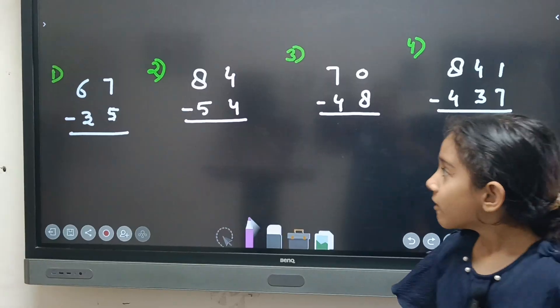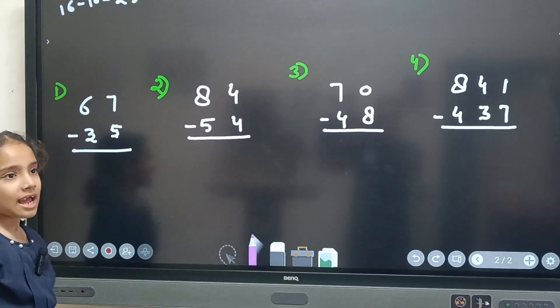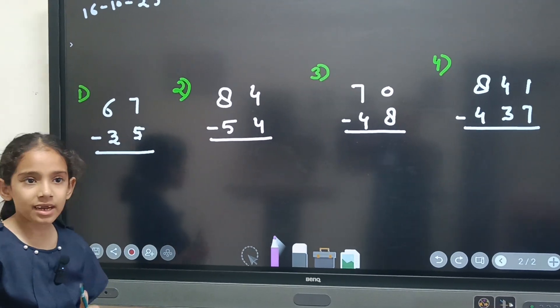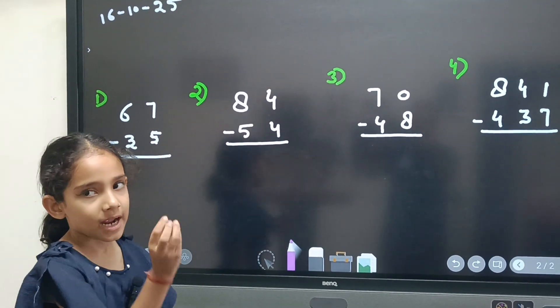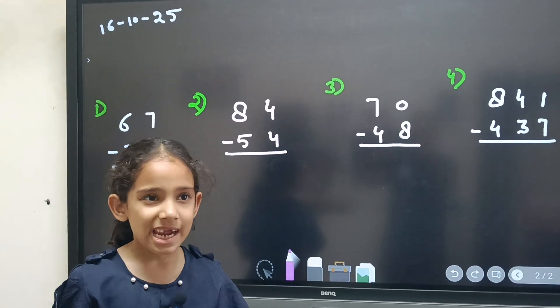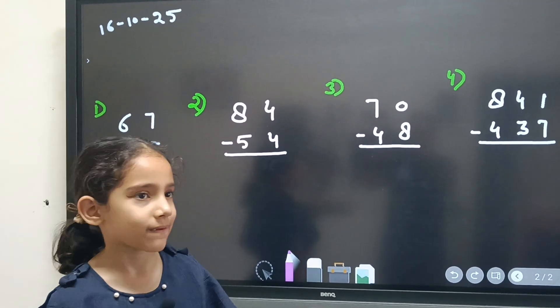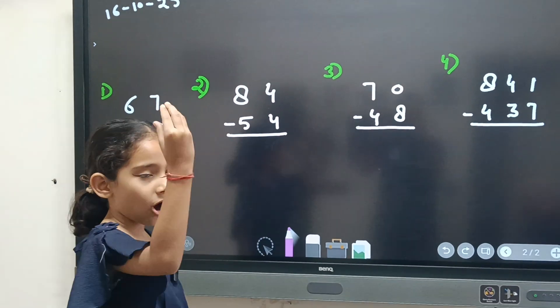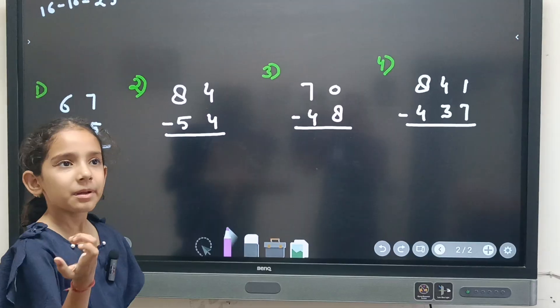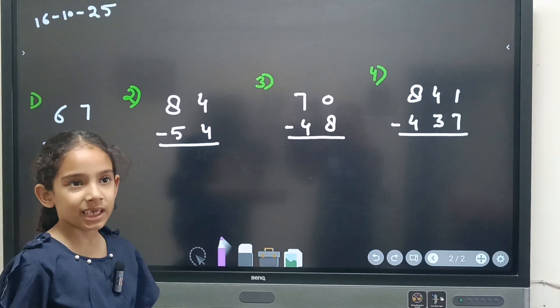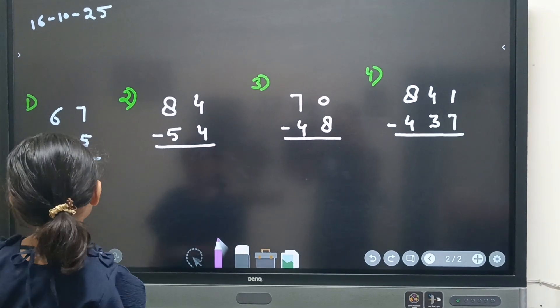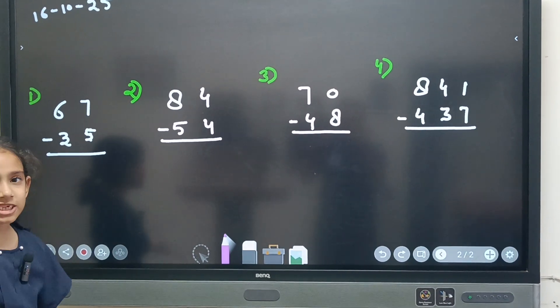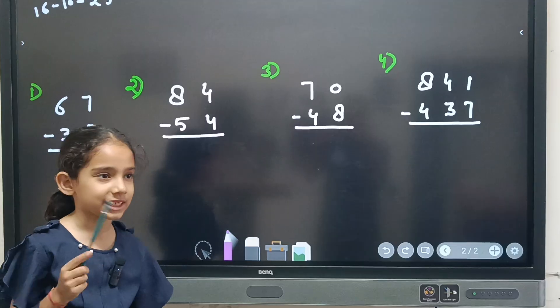Now first question, 7 minus 5. Now you want to see when smaller number is top and bigger number is down it means it is borrowing question. But when bigger number is top and smaller number is down it means no borrowing. First question 7 minus 5. Now 7 is bigger? Yes and it is correct question.